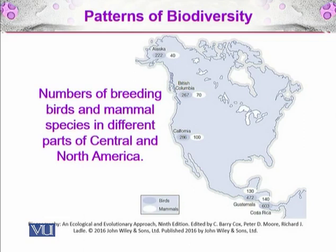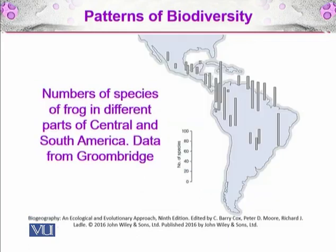You can see that in Guatemala and Costa Rica there is a greater number of breeding birds and mammals compared to California, and the trend continues decreasing towards British Columbia and Alaska as the latitude gradually increases.